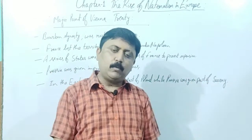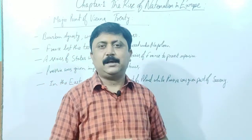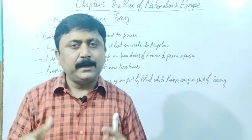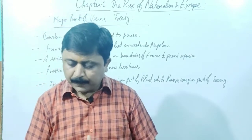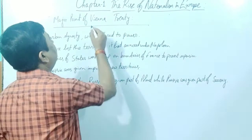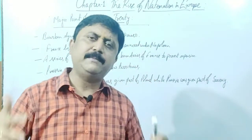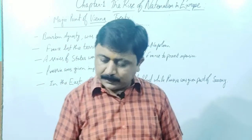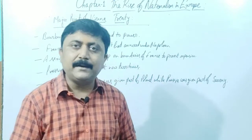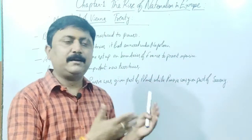So Britain, Russia, Prussia, and Austria collectively defeated Napoleon. After that, in Vienna — which was the name of the place where this treaty happened — the Treaty of Vienna was signed. Vienna is the place, and 'treaty' means 'sandhi' (agreement). The Congress hosted there under Chancellor Duke Metternich, and the Treaty of Vienna was concluded.